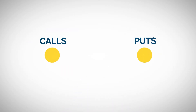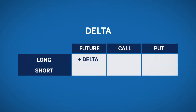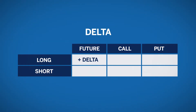Calls then have delta between 0 and 100, and puts have delta between 0 and negative 100. Long futures have 100 delta. Short futures have negative 100 delta. Being long a future results in positive delta, and being short a future results in negative delta.